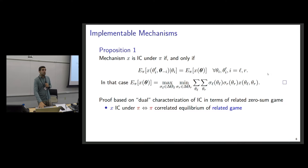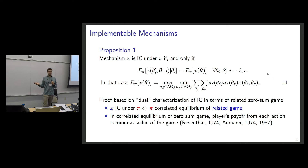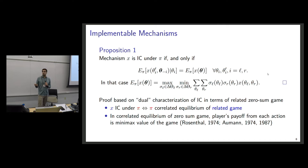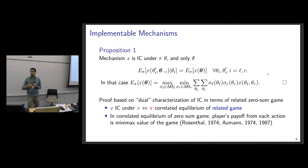This dual view is useful because there is a lot of theory on correlated equilibria, allowing us to apply classical results by Rosenthal and Aumann. In a correlated equilibrium of a two-player zero-sum game, no agent can do better or worse than the minimax value of the game. So this will be each agent's expected payoff, and this is where the minimax formula comes from.